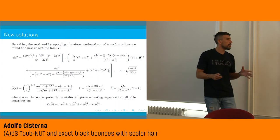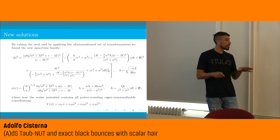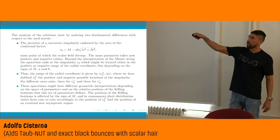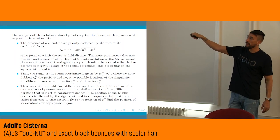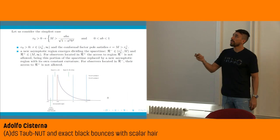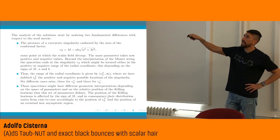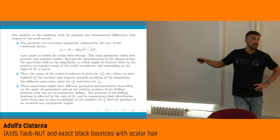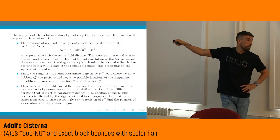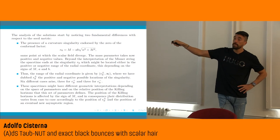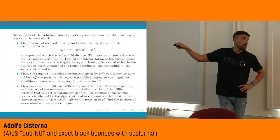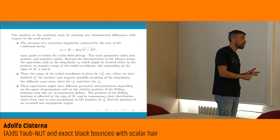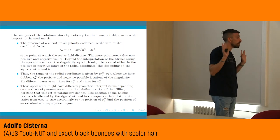So you remove the singularity in the scalar field but pay a price: a new curvature singularity appears in the metric. However, I want to show why this is not so complicated and why you can still get regular black holes. The curvature singularity might be located either in the positive or negative range of the radial coordinate, depending on the values of the parameters. According to the sign and values of m and the transformation parameters, I have different locations for this singularity.